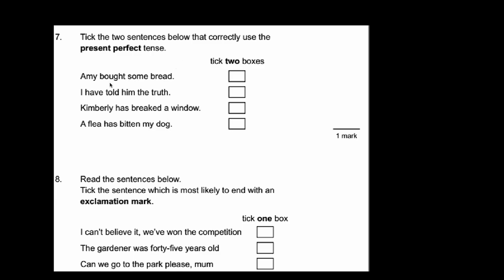And a flea has bitten my dog. So having a look at the options that we've got. 'I have told him the truth' would be the first one. That's in the present perfect. 'A flea has bitten my dog.' That would be the answer to the second one. So we know it's the present perfect tense because it hasn't given us a definite time. If you'd have said 'I have told him the truth yesterday' then that isn't present perfect tense. It's in the past tense. So we need a 'has' or a 'have' and we know that we don't need a time. It's an indefinite amount of time.